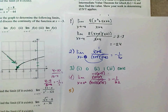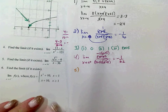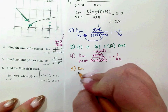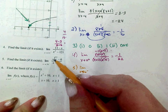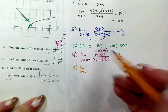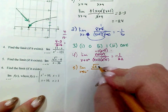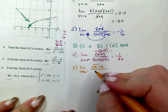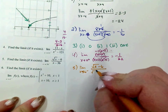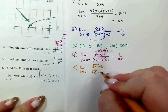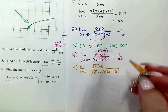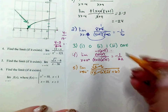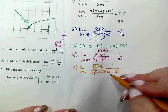Number 5: find the limit as x approaches 36 from the left of this expression. Plugging in 36 gives zero over zero, so there's a hole. The denominator x minus 36 can be written as the square root of x minus 6 times the square root of x plus 6. These simplify with the numerator, leaving 1 over the square root of x plus 6. Plugging in 36: the square root of 36 is 6, so 6 plus 6 is 12, giving 1/12.